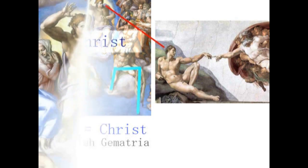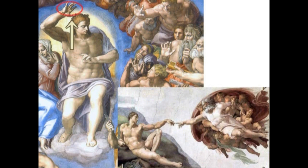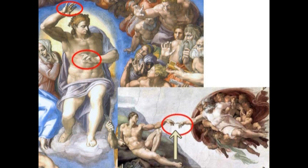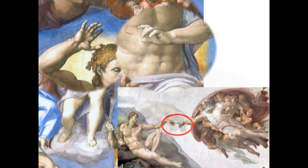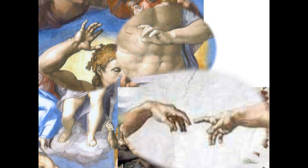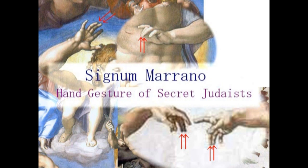その証拠に、もう一度、この2枚の絵を見てください。ハンドジェスチャーに注意してください。中指と薬指がくっついています。これはシグナム・マラノ、マラノの手です。隠れユダヤ教徒のハンドジェスチャーということになります。ユダヤ教徒たちはキリスト教の迫害を逃れて、密かにキリスト教徒の振りをしながら、ユダヤ教を信仰しておりました。そのシンボル的なハンドジェスチャーが、シグナム・マラノです。後のイエズス会、そしてイルミナティのハンドジェスチャーということになります。